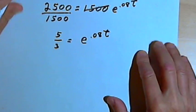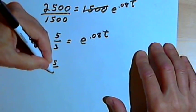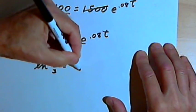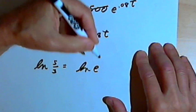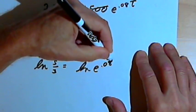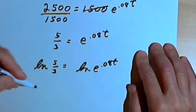I'll take the natural log of both sides. So that's going to be ln of 5 thirds equals ln, the natural log of e, to the 0.08 t. And I'll take that exponent and make it into a coefficient.